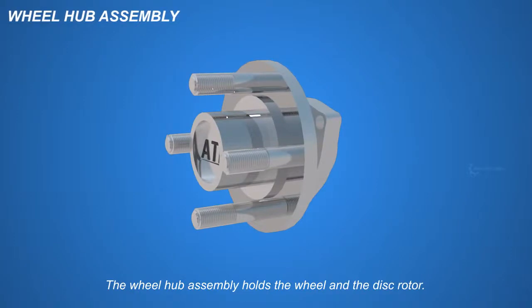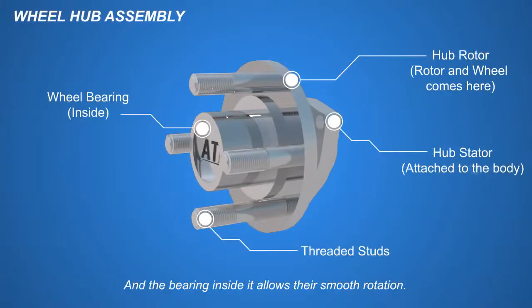The wheel hub assembly holds the wheel and the disc rotor, and the bearing inside it allows their smooth rotation.